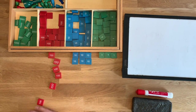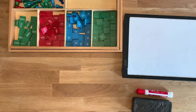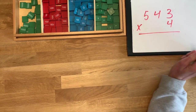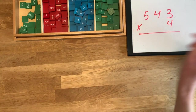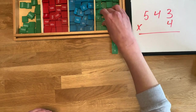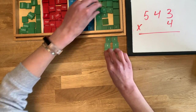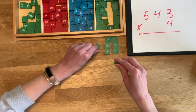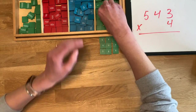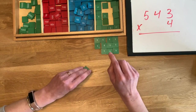Let's try a bigger problem. This time we're going to take 543 times 4. So we're going to get out three units four times: three units one time, three units two times, three units three times, three units four times.